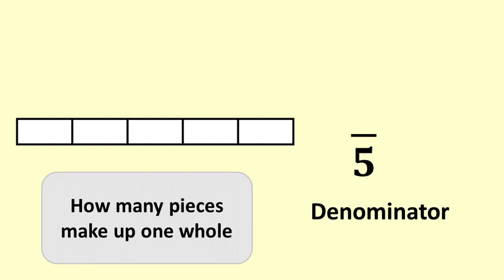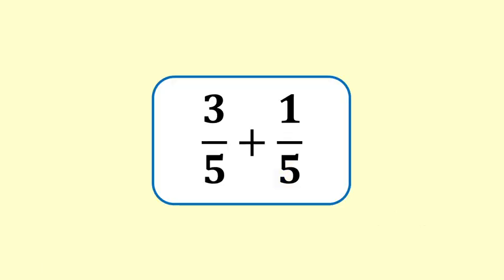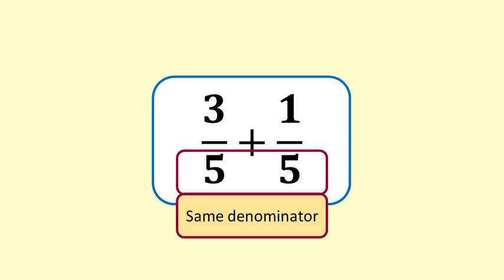The denominator is the number on the bottom of the fraction that tells you the size of each piece, by telling you how many pieces make up one whole. The numerator tells you how many pieces you have. When two fractions have a common denominator it means they have the same denominator, or the same number on the bottom. Three fifths and one fifth have a common denominator of five.